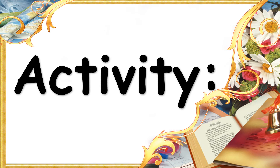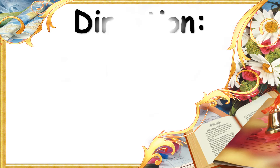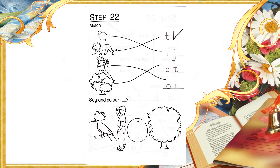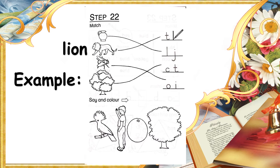Activity. Directions: Match the picture to the first letter of the word. Write the letter — Step 22. Match the word, write the missing letters, read and color the picture — Step 23. Example: Lion. What is the first letter of the word lion? L. Write the letter L. Very good.